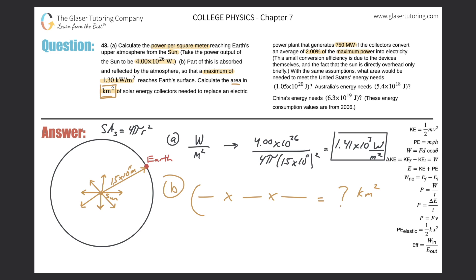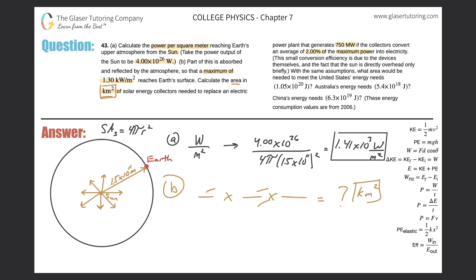When I set up these conversion factors, all the units will cancel — whatever units I place, all of them will cancel except for kilometers squared. That's the goal.